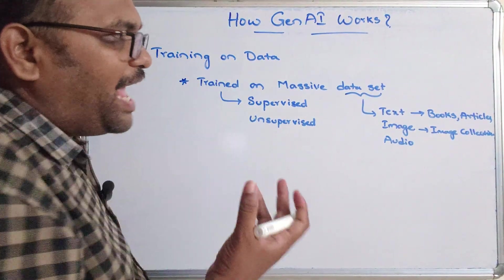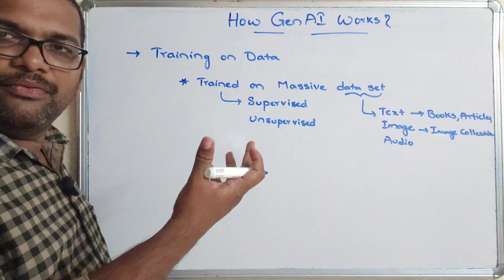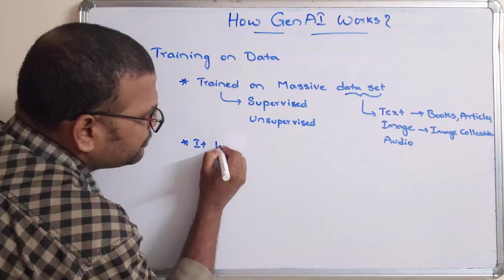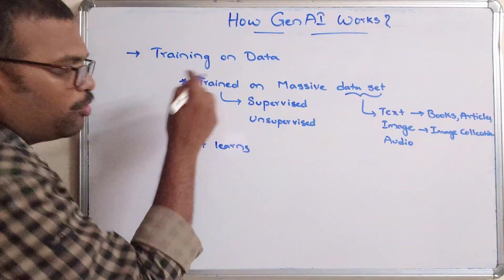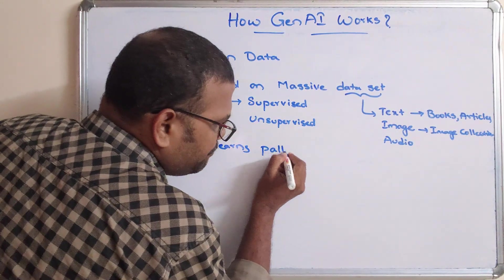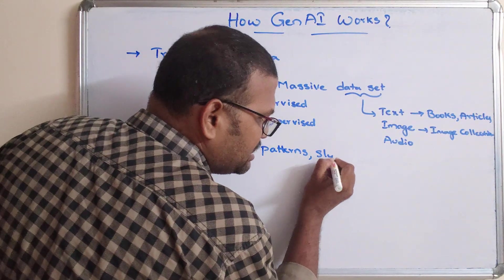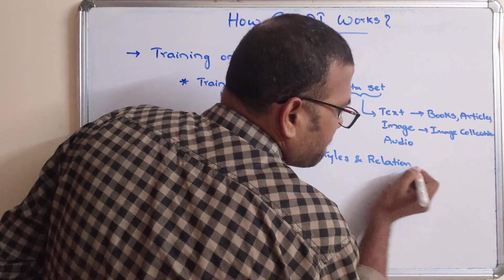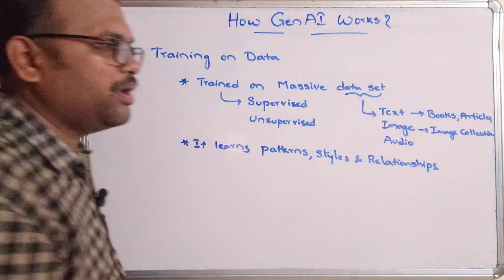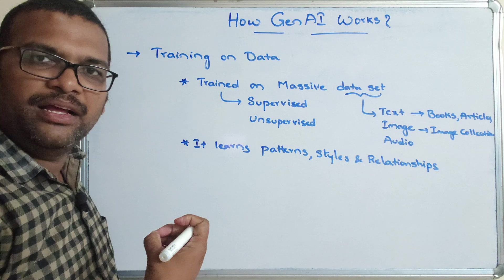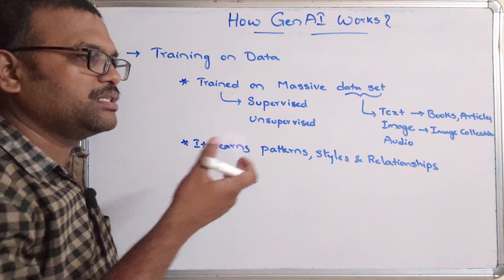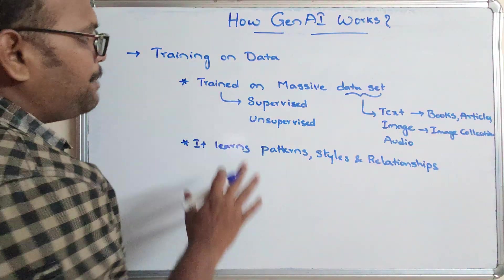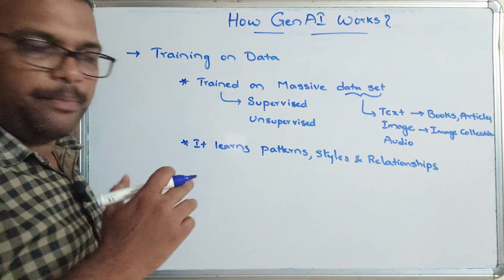After being trained on this data, the AI model learns the patterns, styles, and relationships from the dataset. So it understands what patterns exist, what styles are present, and what relationships can be found. This is what happens in the training-on-data phase.